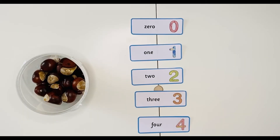Using these maths number system word cards, you could use natural materials that you've spent time collecting with the children to place the correct number of items by the correct card.